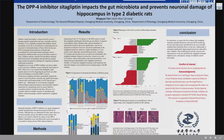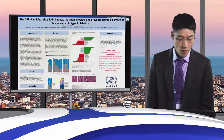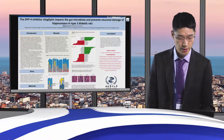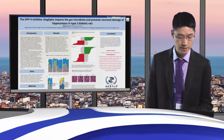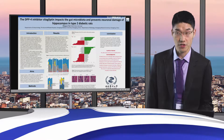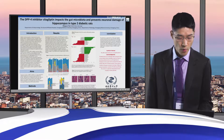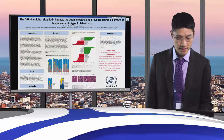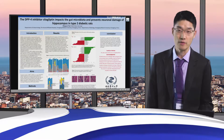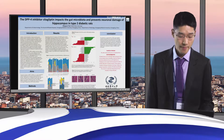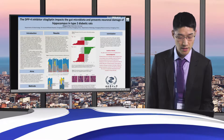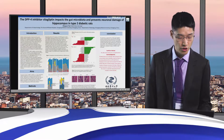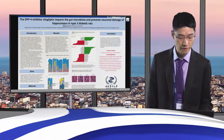Cetylchlyptin, a novel type of DPP-4 inhibitor, has been widely used to treat type 2 diabetes by preventing the inactivation of GLP-1. However, it was reported that cetylchlyptin could regulate glucose levels by triggering the gut-brain axis, other than the classical inhibition of intestinal DPP-4 activity.